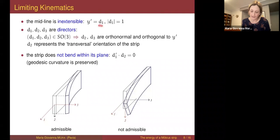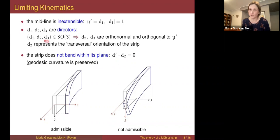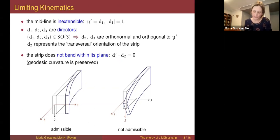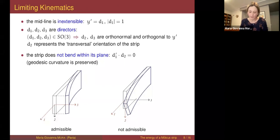The constraint found from compactness can be interpreted as: the geodesic curvature of the midline is zero. Since d₁ is the tangent vector, its derivative gives the normal to the curve — which is orthogonal to d₂ and therefore parallel to d₃, the normal to the surface. In other words, the curvature of the midline is entirely in the normal direction to the surface; there is no geodesic curvature. In mechanical terms, the strip cannot bend within its plane — bending is allowed only in the normal direction to the strip.